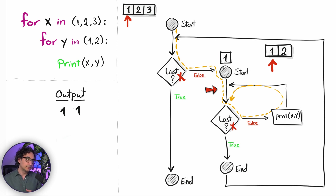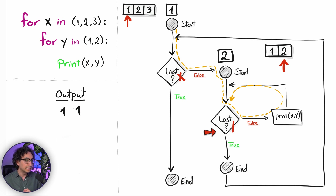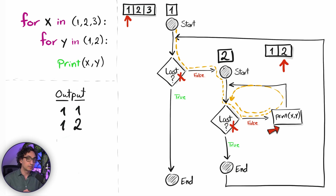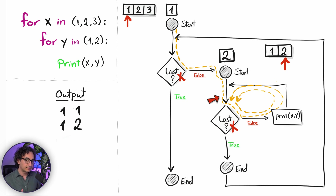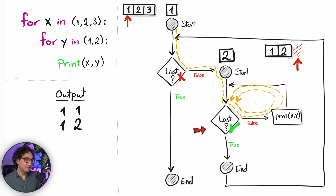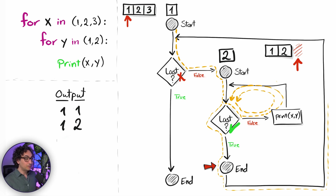Python goes back to the top of the inner loop and asks for the second item — it gets two. Since we're not done, it prints: x is still one but y is now two, so the output shows one two. Then Python asks for the next item and the inner iterator returns a stop, so Python exits the inner loop.